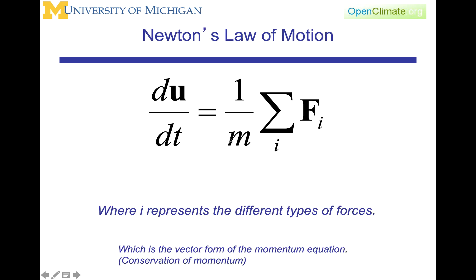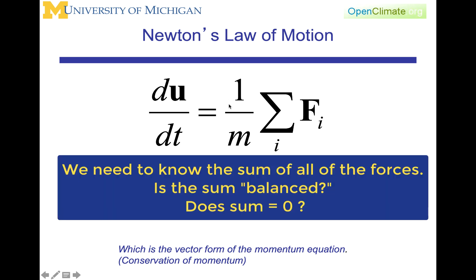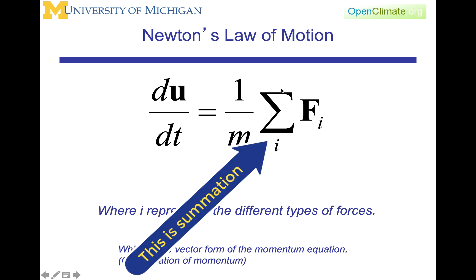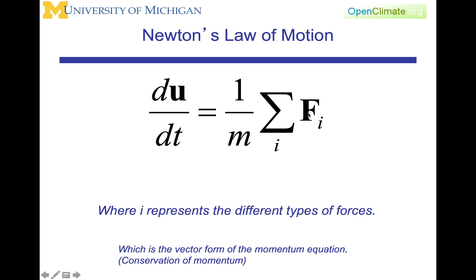Returning to Newton's law, we are interested in the sum of all the forces and the imbalance of all those forces. Then dU/dt, the acceleration, is equal to 1 over M times the summation over i of all the different types of forces, where i represents the different types of forces.